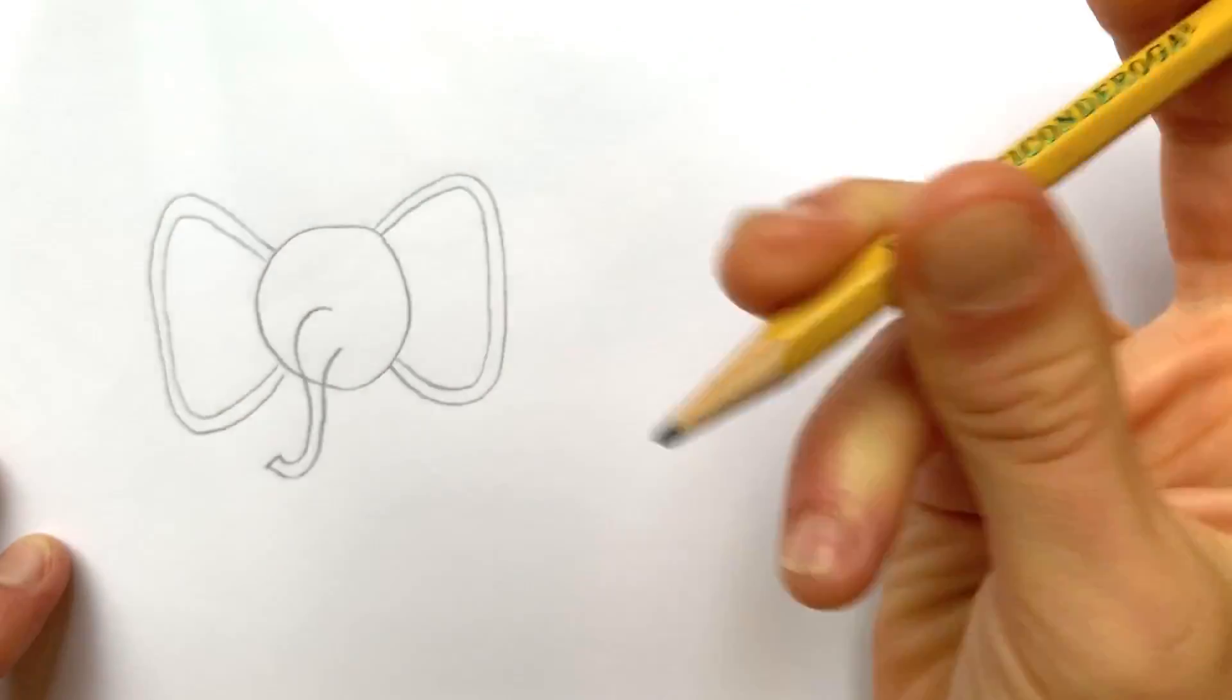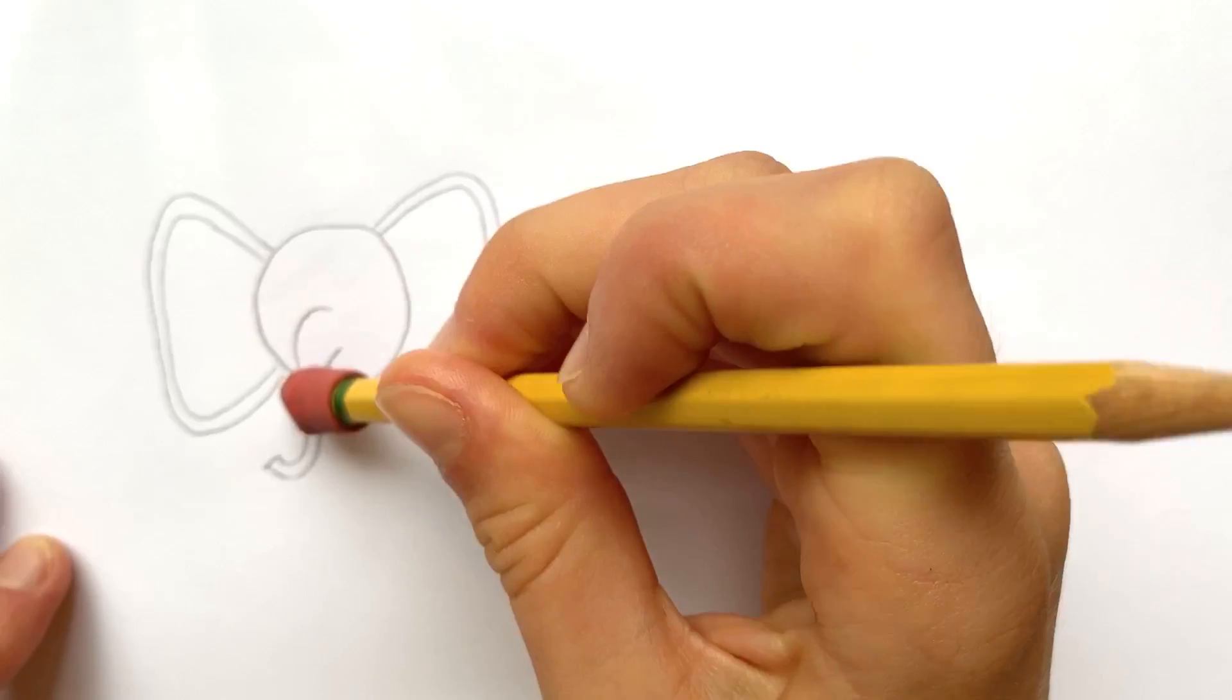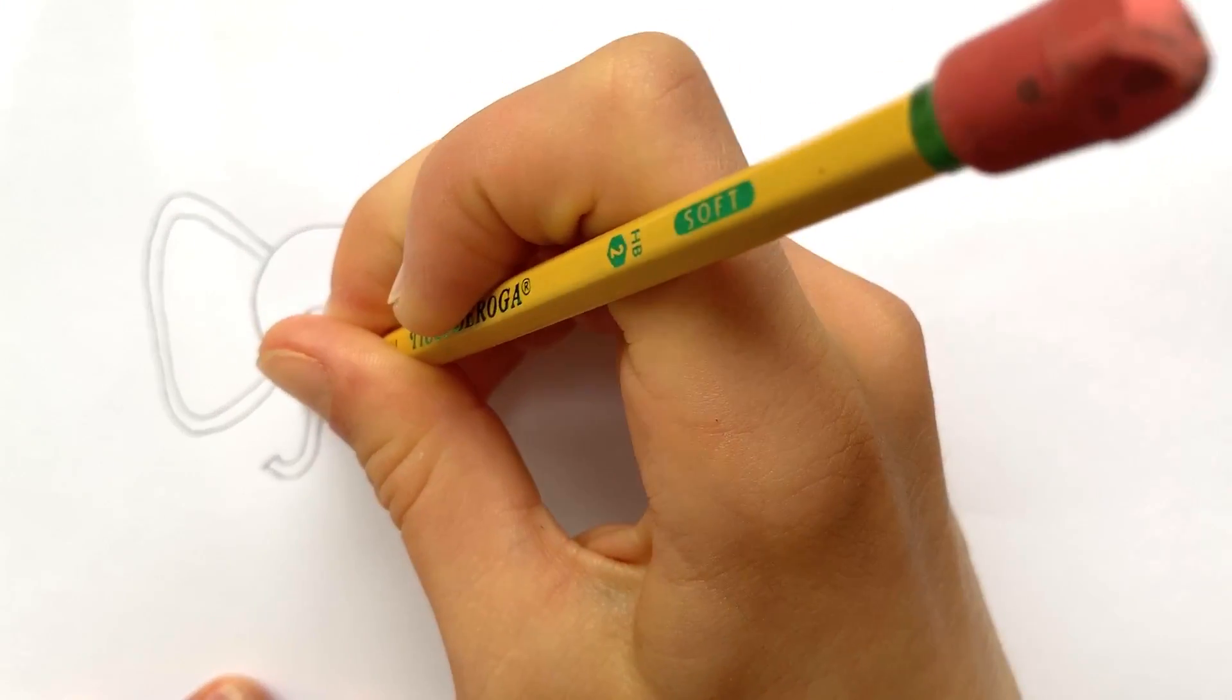There you have a trunk, and then we will erase the line in between because the trunk is over that part. You can do a few little lines if you want.